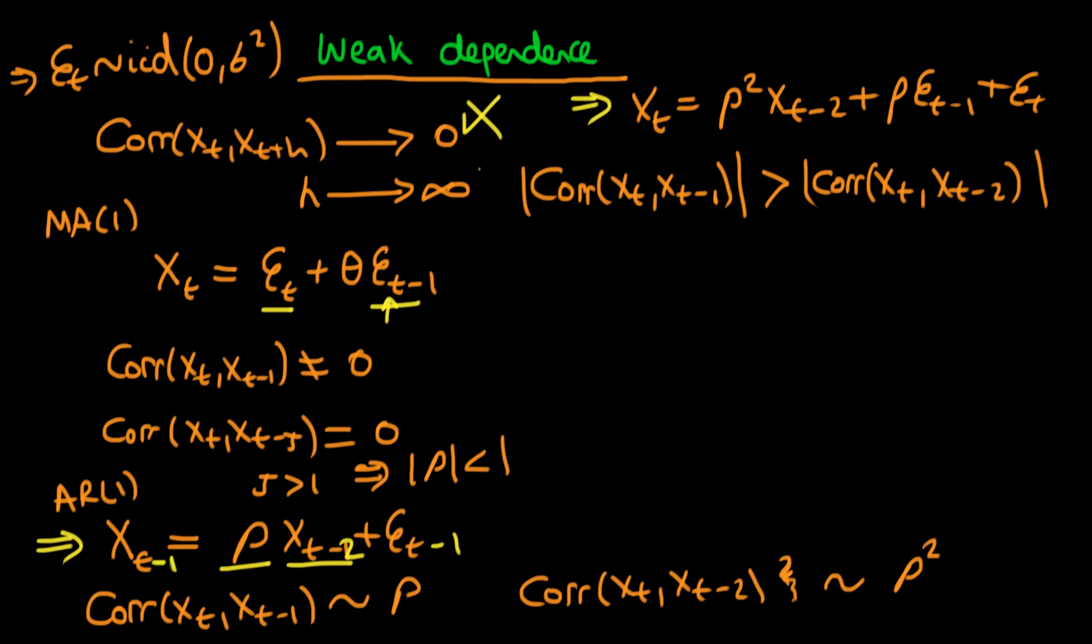What about a series that isn't weakly dependent? It's similar to the standard AR(1) process, except now we set ρ equal to 1. We have X_t equals X_{t-1} plus ε_t. By extension, this equals X_{t-2} plus ε_{t-1} plus ε_t. The correlation of X_t with X_{t-1} is the same as the correlation of X_t with X_{t-2}.